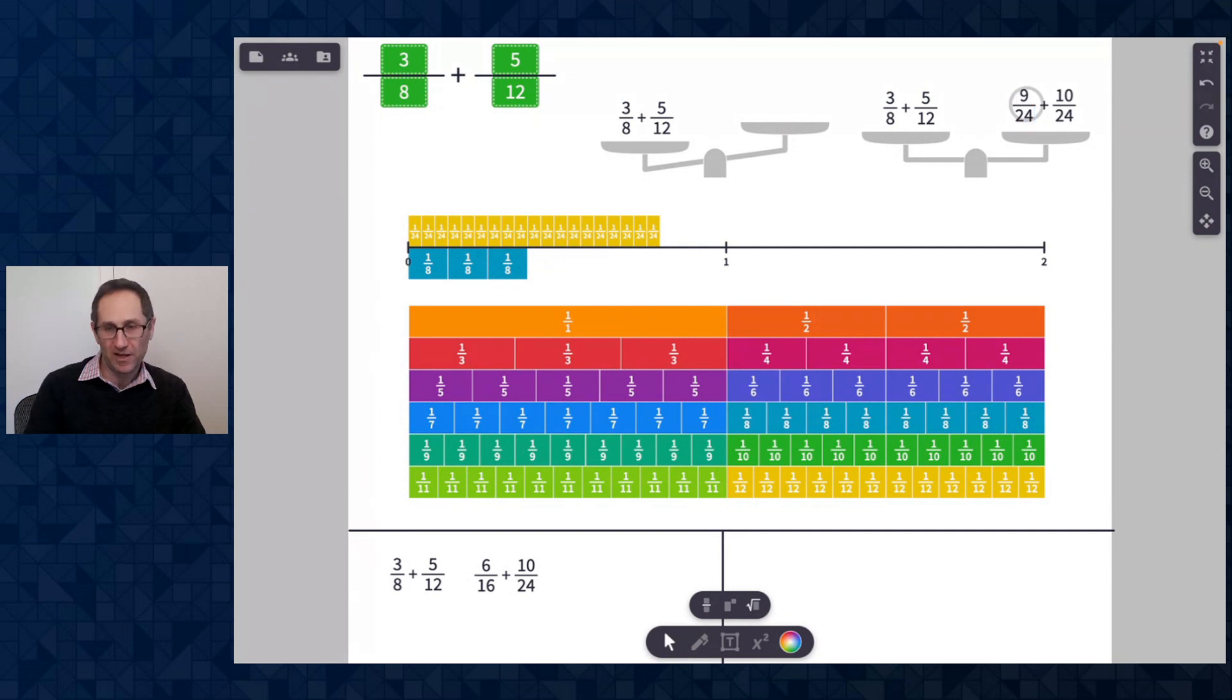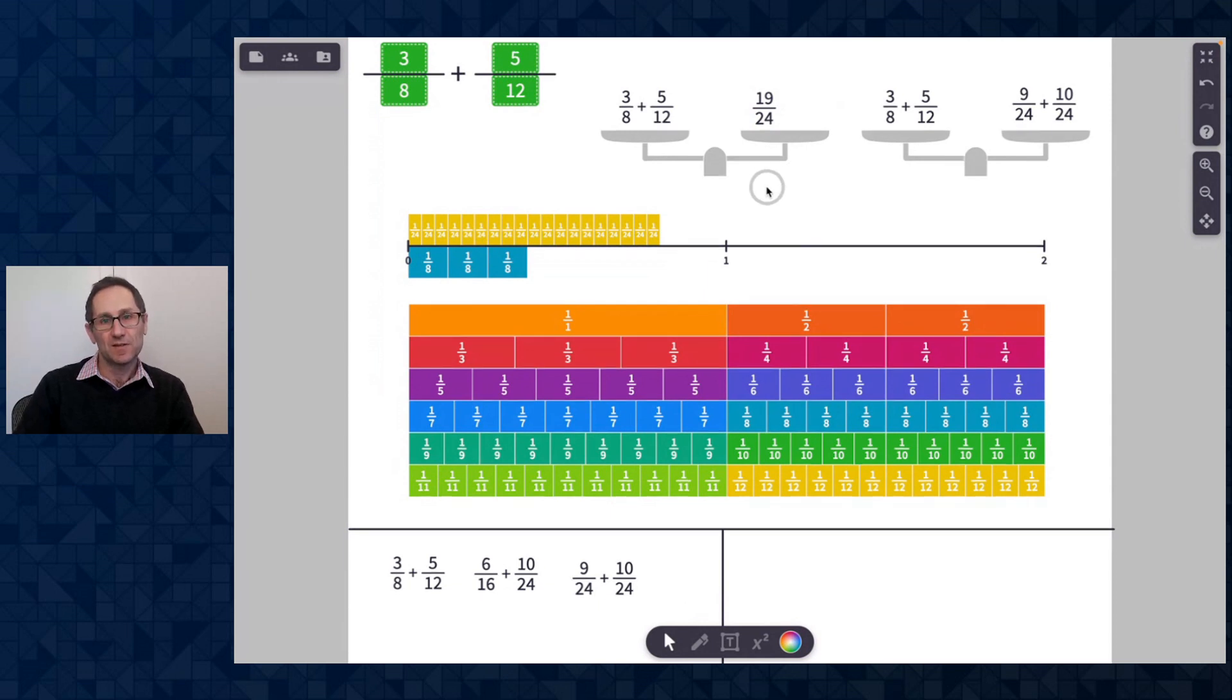And I hope when I hit return it stays balanced. It does. If I counted wrong, for example, and I got 10 twenty-fourths, I'd see that it's not balanced anymore. So I know that that is 9 twenty-fourths and 10 twenty-fourths. I'm going to make a copy of that and bring it down here just to keep track of my work. I'll do the same and put it over here to try to find the answer. So that is going to be 19 twenty-fourths. Let me see if that's balanced. Indeed it is. So I found the answer to this first question. It is 19 twenty-fourths.